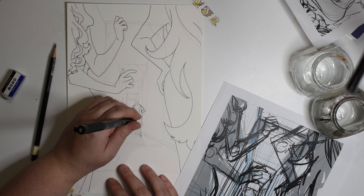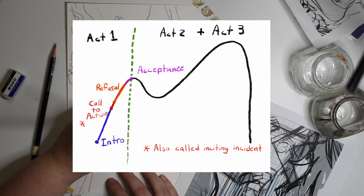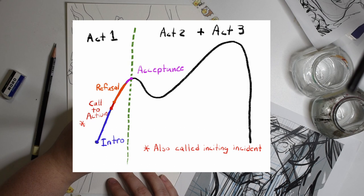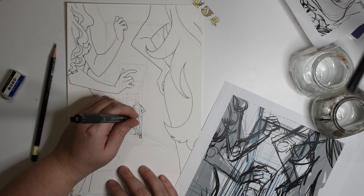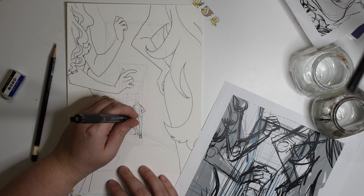Like every significant setup begins in the first act, and even more so the first section of the first act. Act one is built up of introduction, call to action, refusal of the call, acceptance of the call — and the most important two of those are introduction and inciting incident. In this video I'm going to be discussing the introduction, and later I will break down the other pieces of act one. Possibly. We'll see.